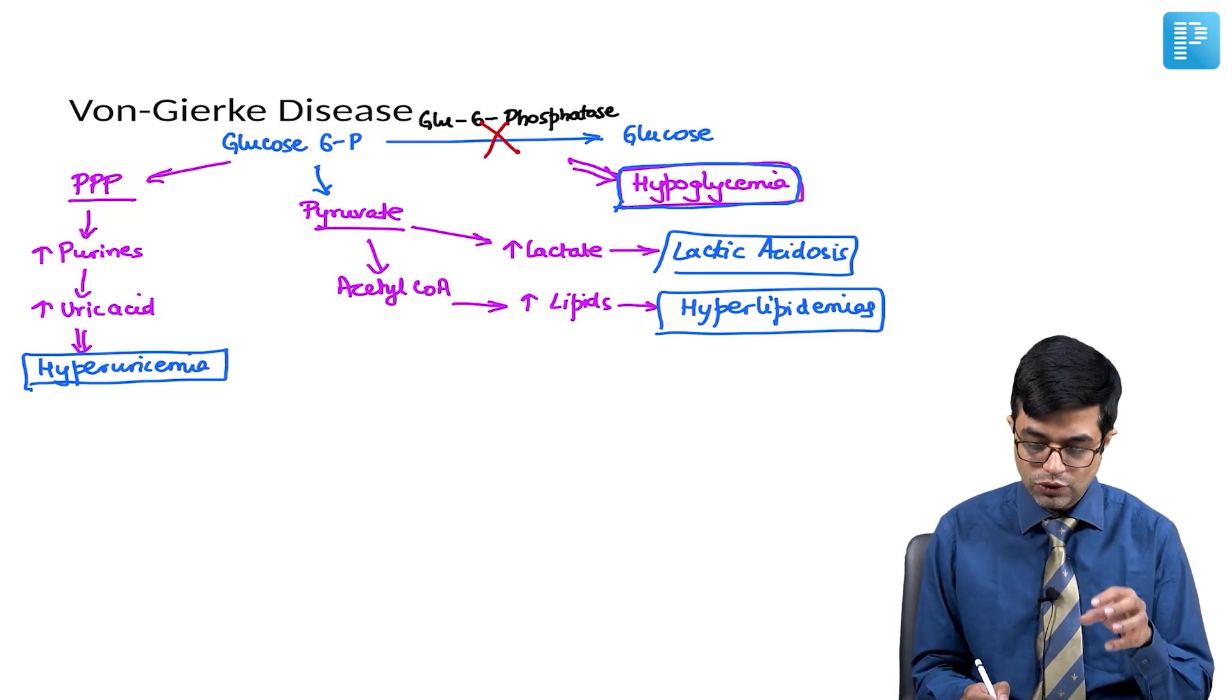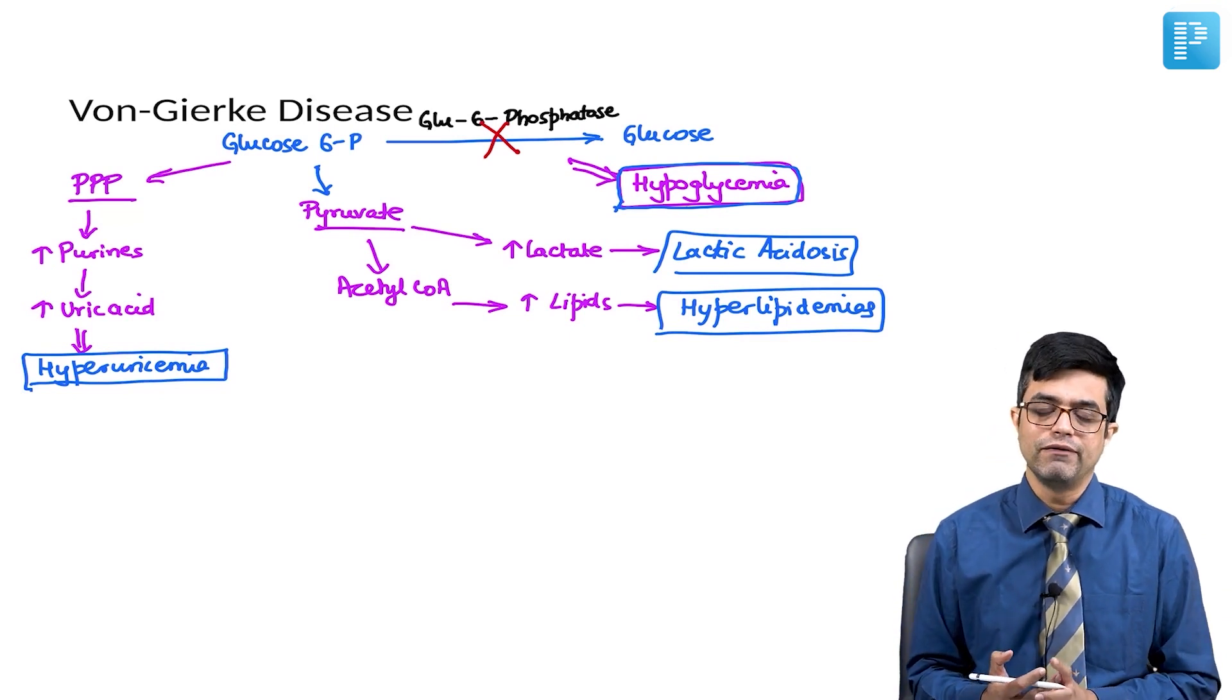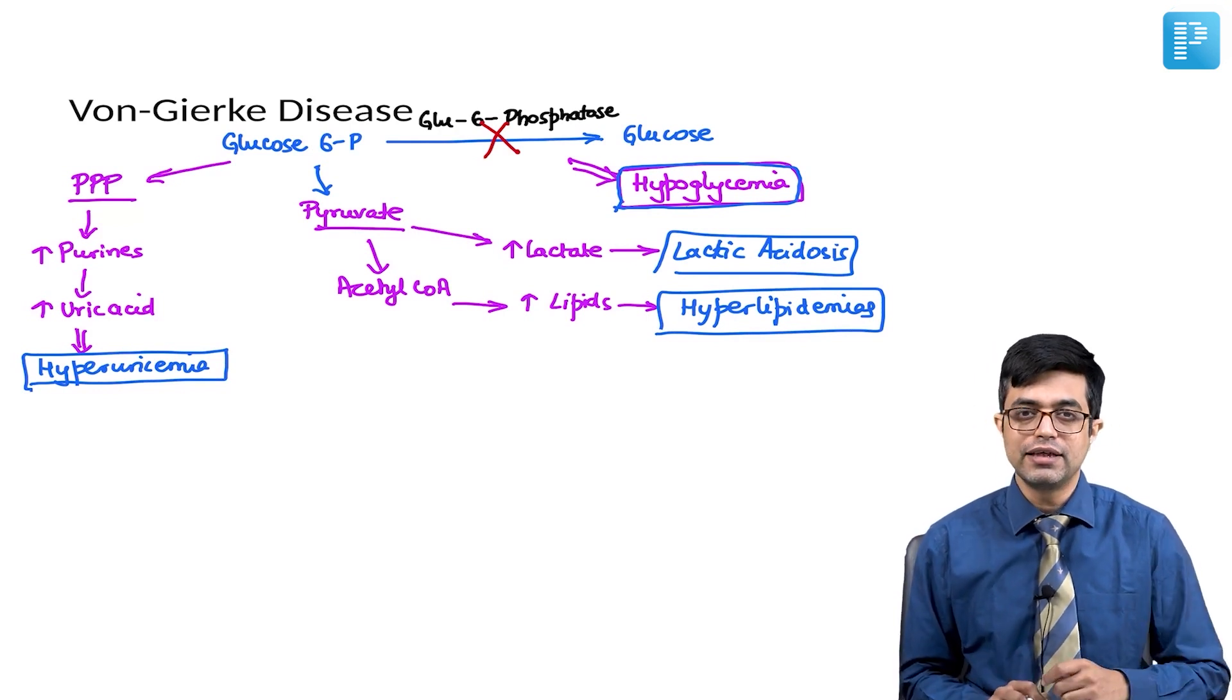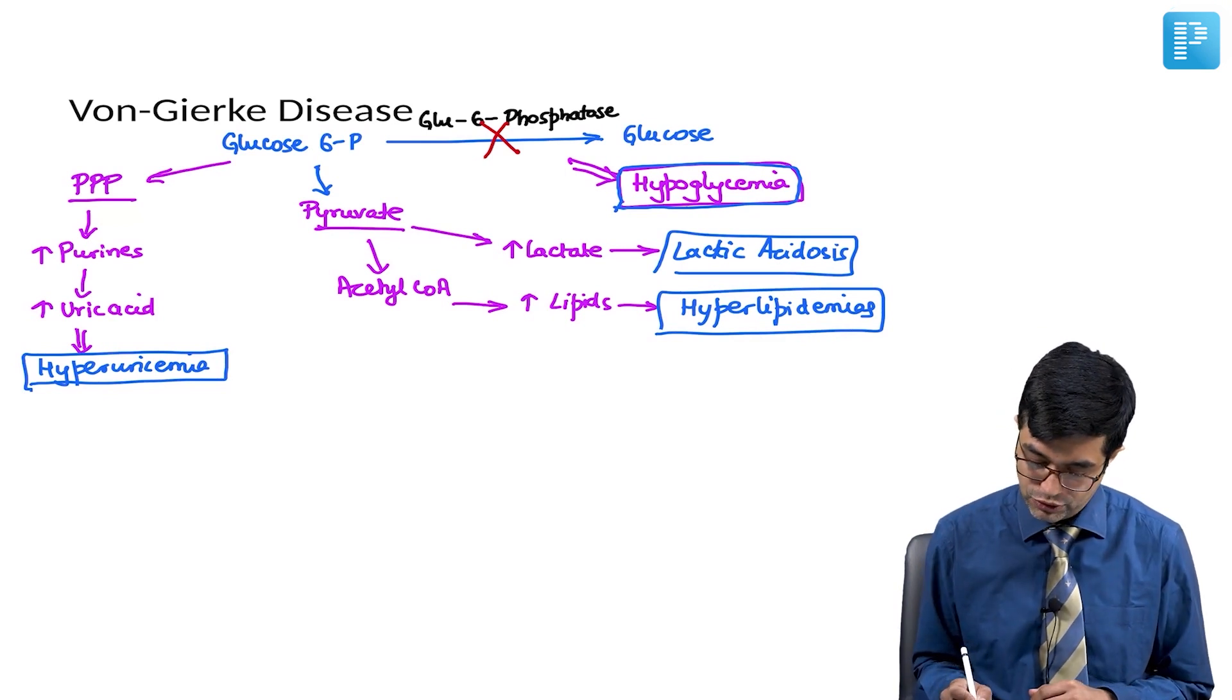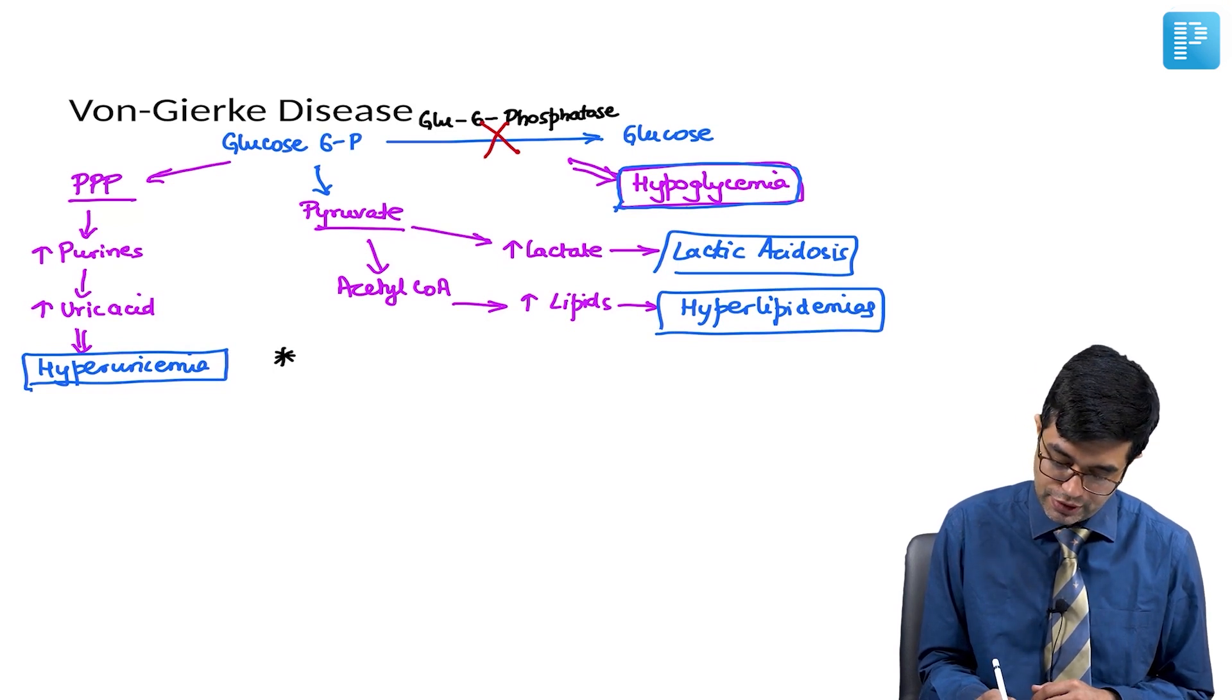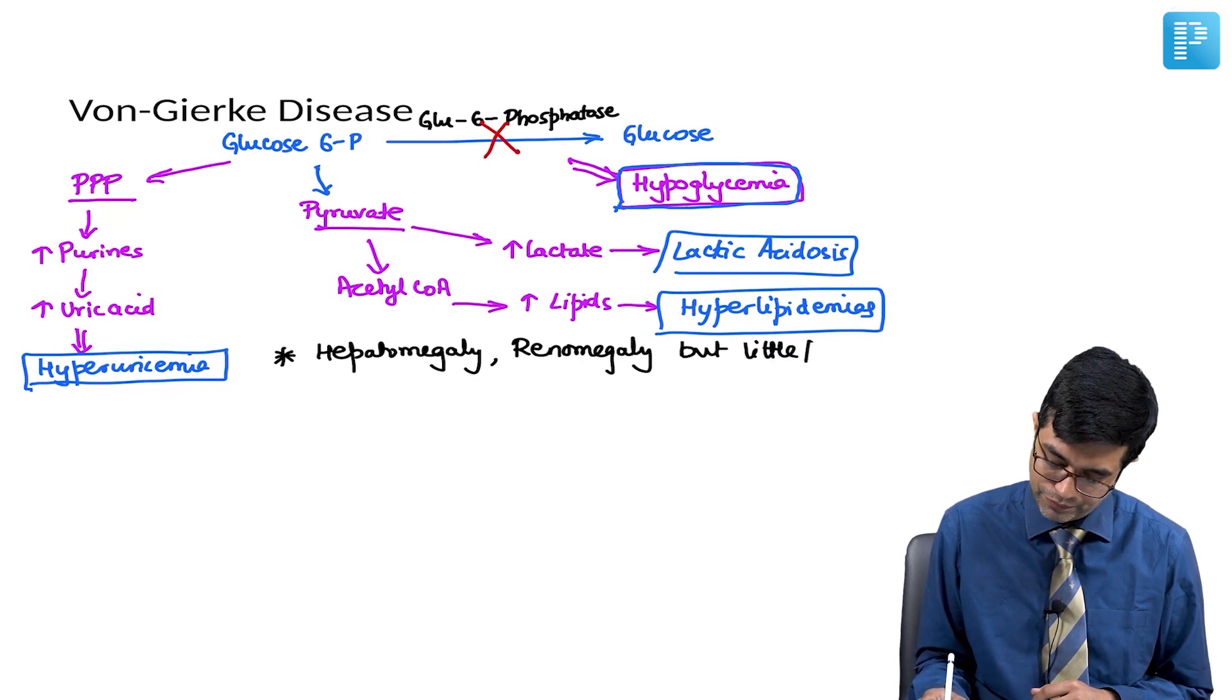Also remember that this glucose 6-phosphate and its preceding metabolites will be accumulated in various organs. Predominantly, liver and kidneys are affected and their dysfunction sometimes happens. Splenomegaly is rare to absent. So, you can put a star and write a very important point that most of these patients are found to have hepatomegaly, renomegaly (large kidney) but little to no splenomegaly.